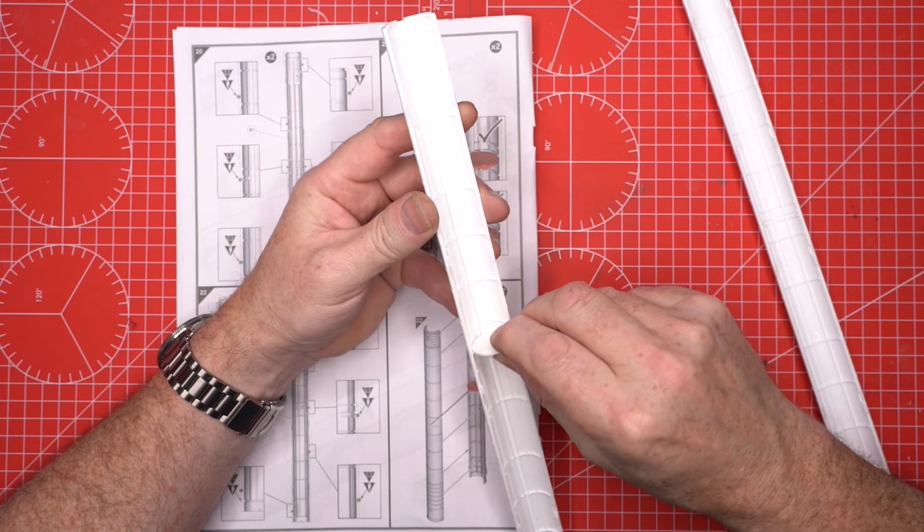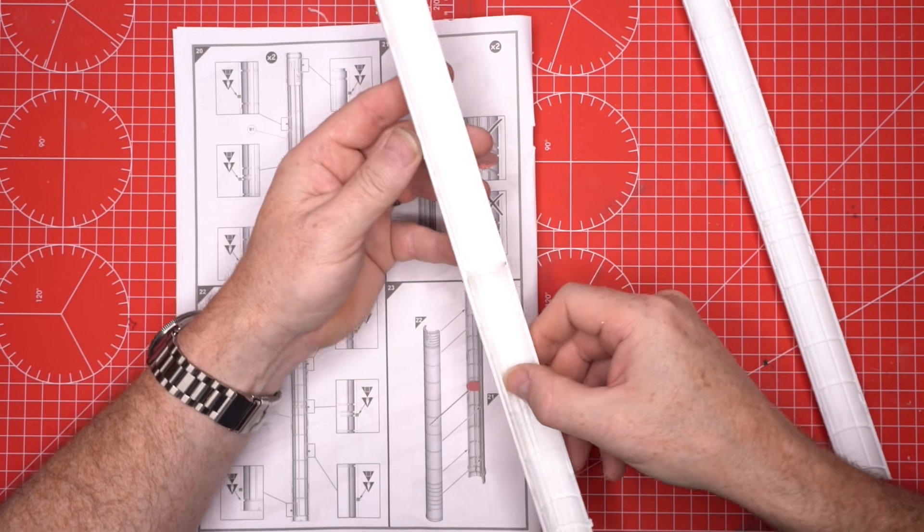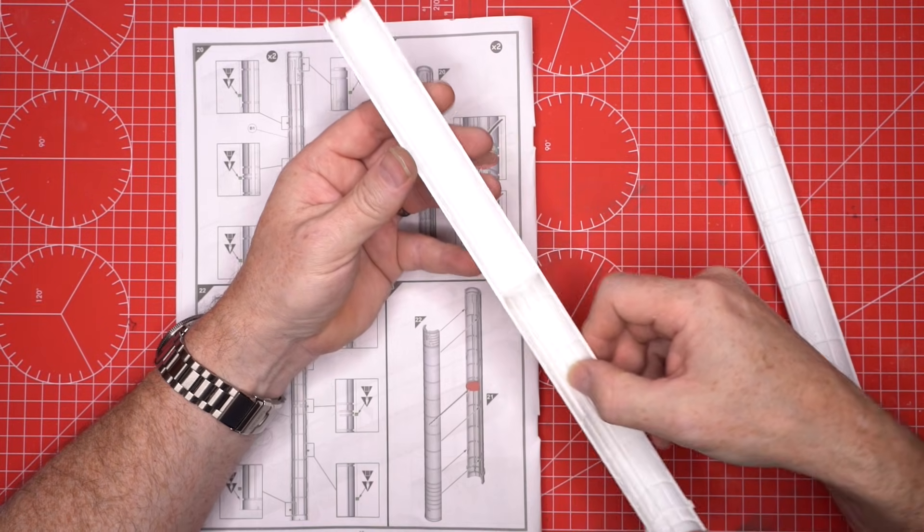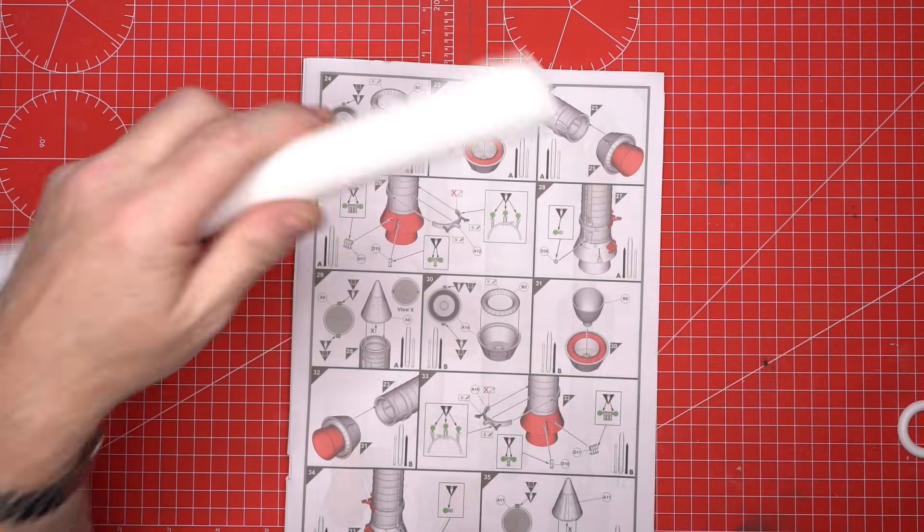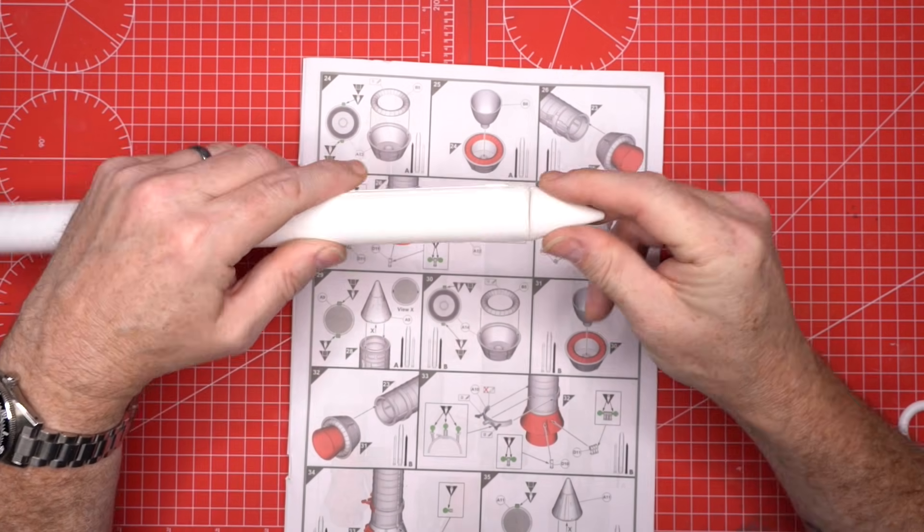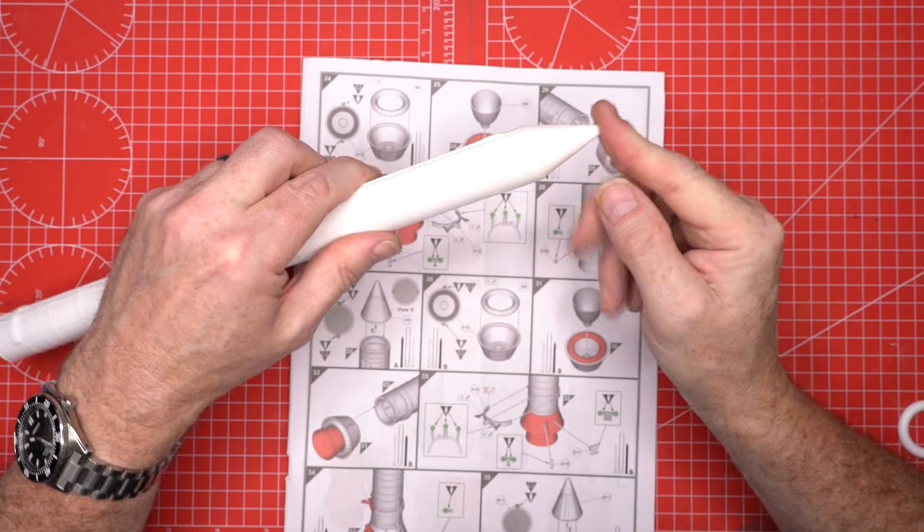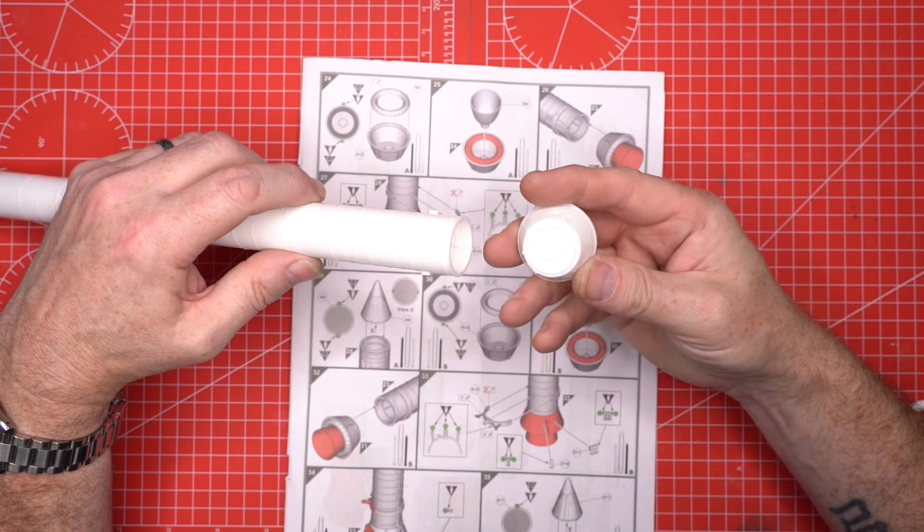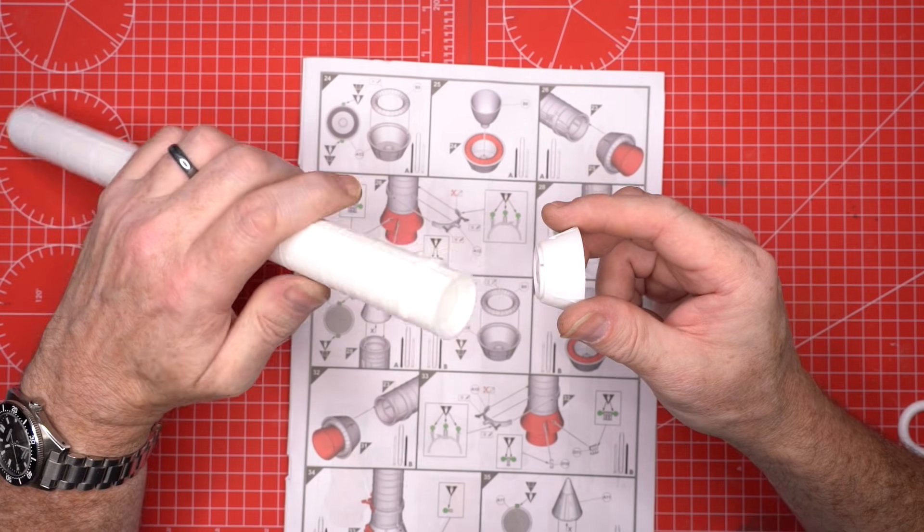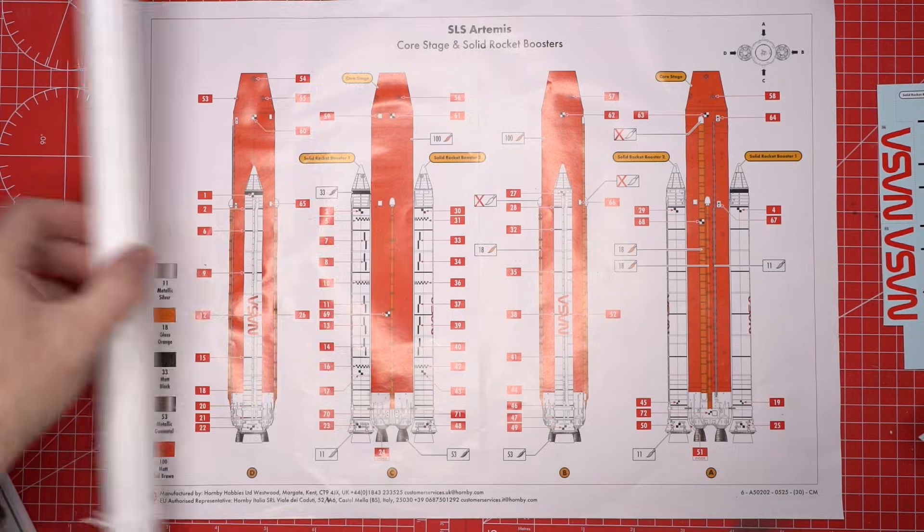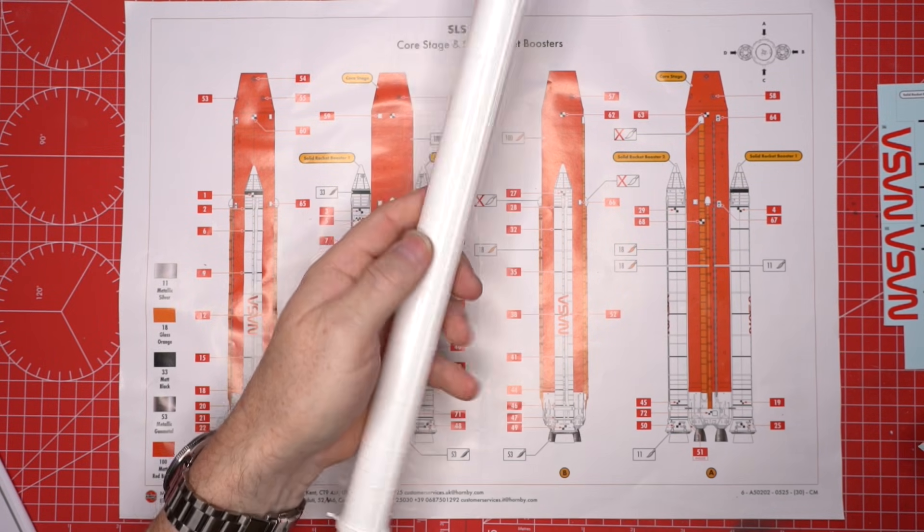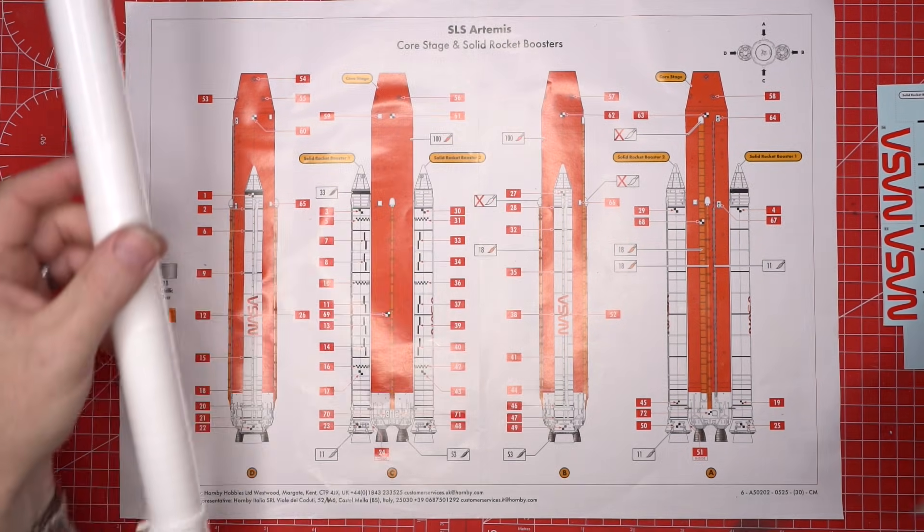Each booster begins with an internal bulkhead. We match the alignment marks carefully, then close the halves around it. This gives us two smooth cylindrical booster bodies. We attach the keyed nose cones and lower engine sections. The internal silver dome and white nozzle slot cleanly into the base. We prime, smooth the seams, and paint the boosters bright white. A coat of satin varnish protects them for decal work.